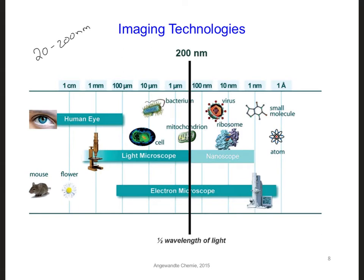But conventional imaging technologies can only image features of cells that are larger than 200 nanometers using our eyes or a light microscope, for example. This is because the diffraction limit of light means it can't be used to study anything smaller than about half of a wavelength.